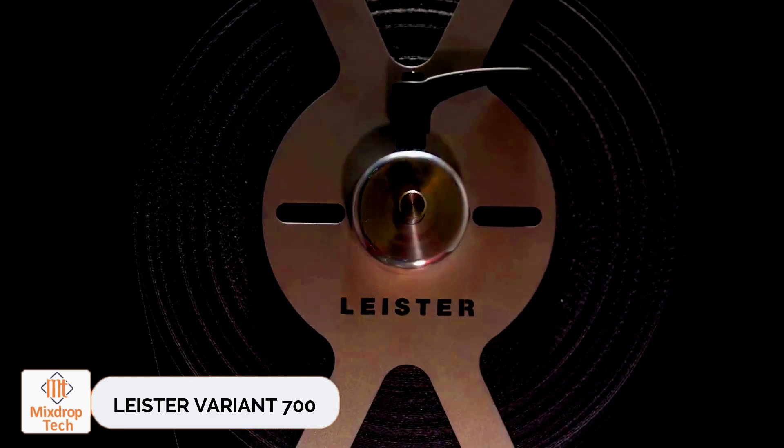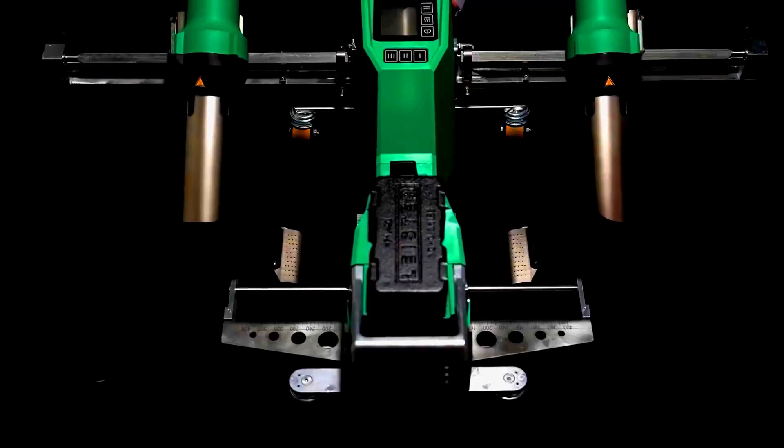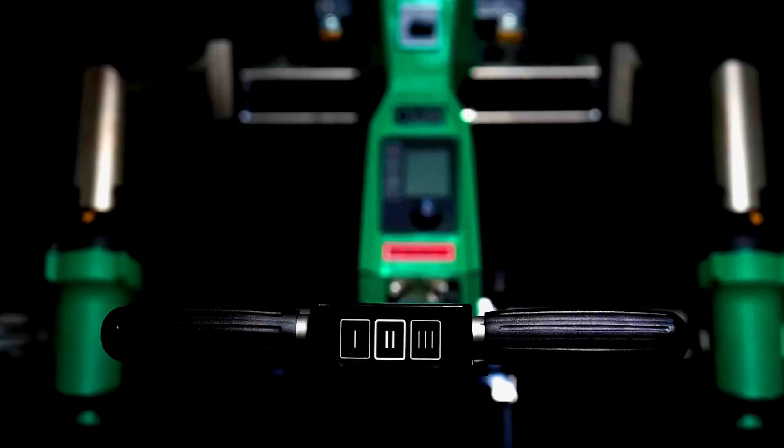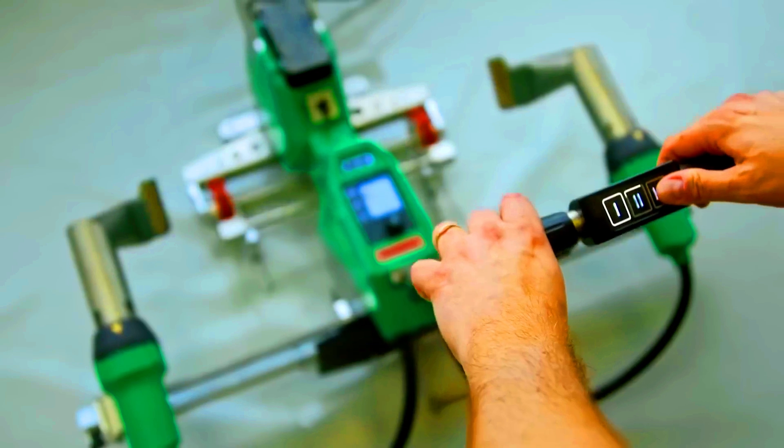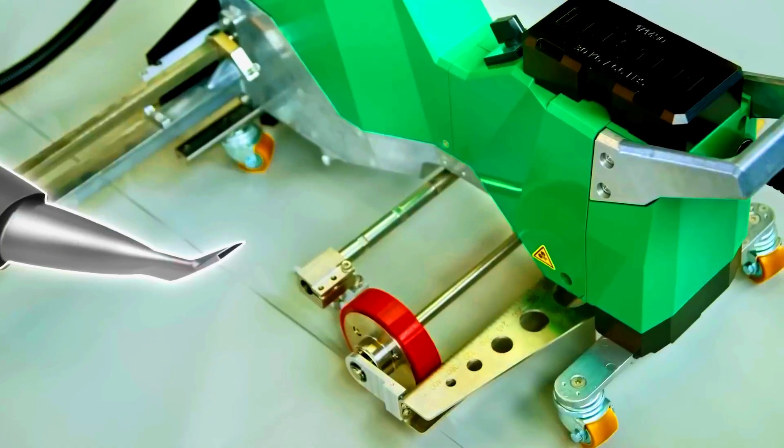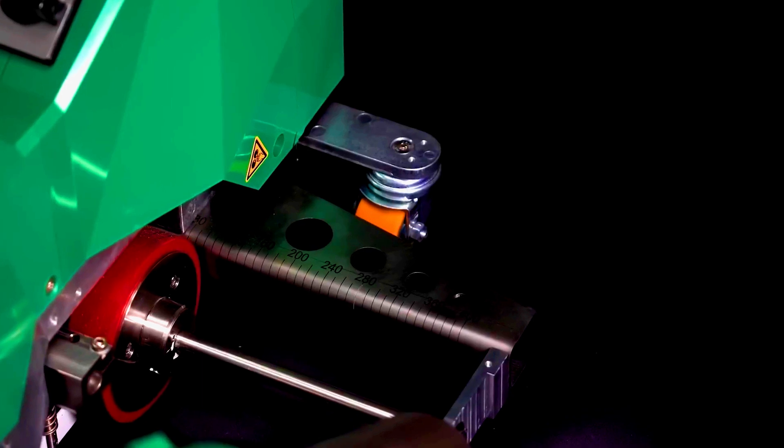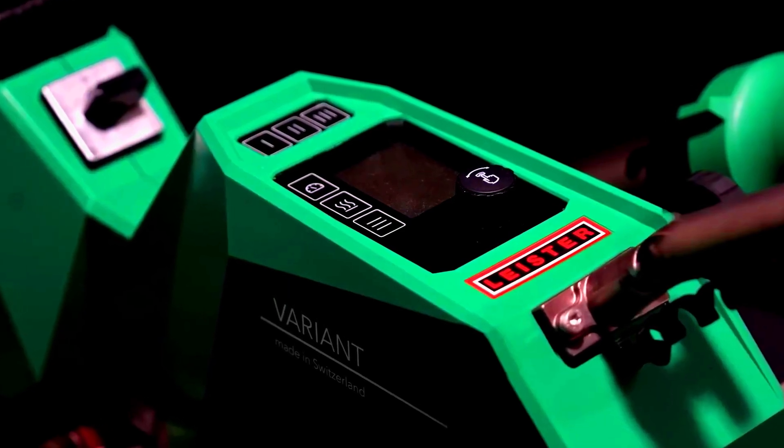Leister Variant 700. The Leister Variant 700 is designed for quick and easy welding of various materials. Common tasks for this equipment include repairing truck tarps, preparing advertising banners, and creating tanks. The Variant 700 model handles all these tasks and offers welding widths ranging from 2 to 5 centimeters.